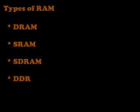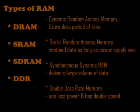First, DRAM — full form: Dynamic Random Access Memory. It stores data for a short period of time; after the time interval, the data is erased from memory. Next is SRAM — full form: Static Random Access Memory. It retains the stored data as long as power is available in the computer.